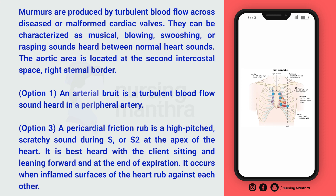Regarding Option A, in the question they were asking about a blowing sound. Murmurs produce blowing or swooshing, musical, or rasping sounds between the normal heart sounds. And the aortic area in the picture is located at the second intercostal space on the right sternal border.